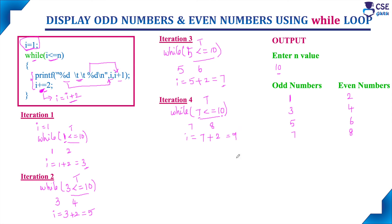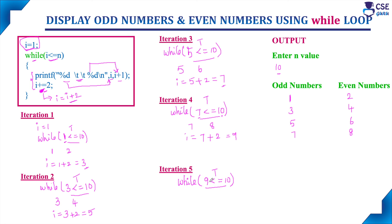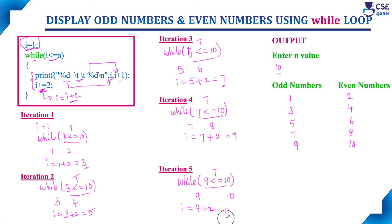With i value 9, consider the next iteration. Check the condition: while 9 is less than or equal to 10 — condition is true. It will allow the body of the loop to execute once, and it will print i value 9 and i plus 1 value 10. So in the output screen, 9 and 10 will be printed. Next, update i: i gets incremented by 2, so i value becomes 11.